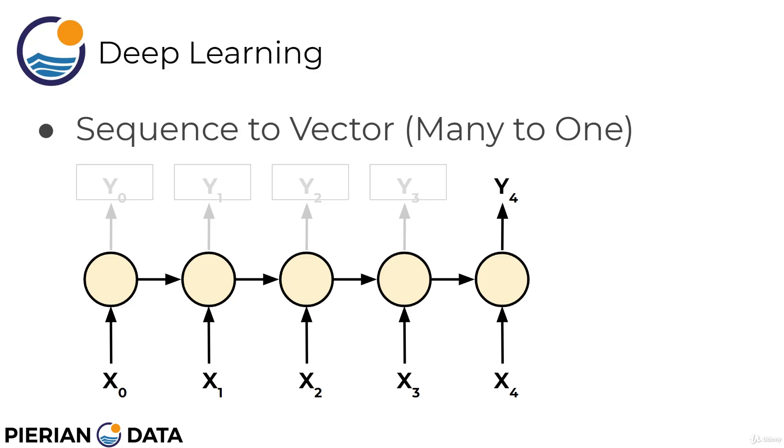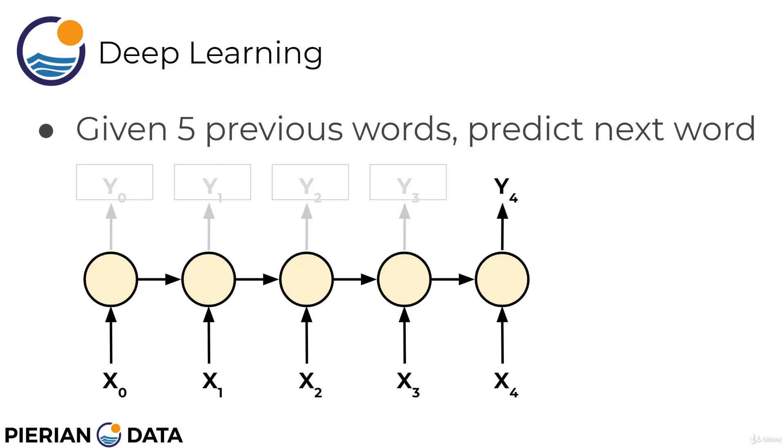Then, there's also a sequence-to-vector. This is known as many-to-one, where we're essentially just passing a sequence and then predicting a single value. So, for example, given five previous words, go ahead and predict the next word. So, we can use this to generate text. Given five historical words, what's the most likely next word after this?